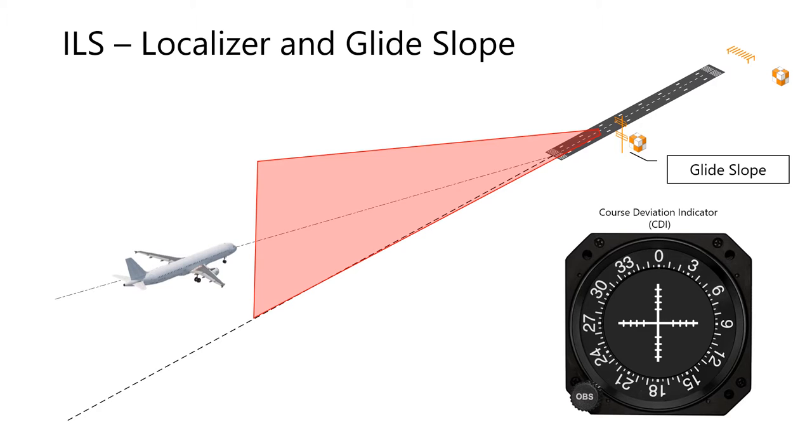Together, the localizer and glide slope funnel in aircraft in what is considered to be a precision approach. To be considered precision, it must have the glide slope component. The ILS is used for limited or reduced visibility to satisfy instrument flight rule or IFR regulation requirements.